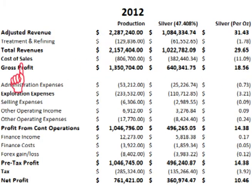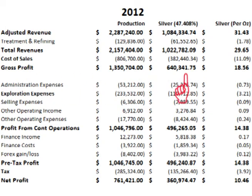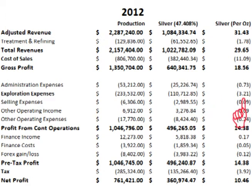In 2012 there were total cost of sales of about 800 million, with about 382 million coming from silver or $11.09 per ounce. The annual report has a breakdown of cost of sales in a separate table, which we will break down item by item in a moment. Subtracting cost of sales from total revenue after treatment and refining costs gives a gross profit of about 1.351 billion, with about 640 million coming from silver or $18.56 per ounce. There were administrative expenses of about 53 million with about 25 million coming from silver or 73 cents per ounce. There were exploration expenses of a little over 233 million, with about 111 million coming from silver or $3.21 per ounce.